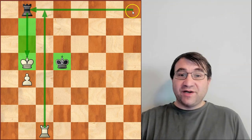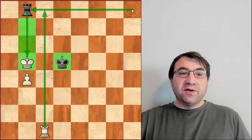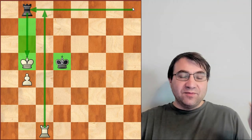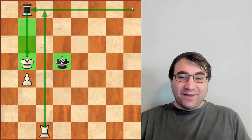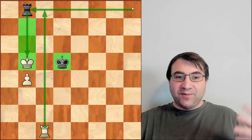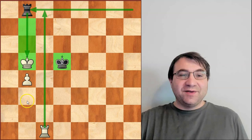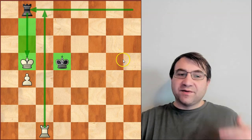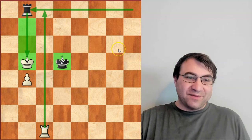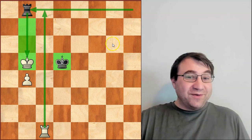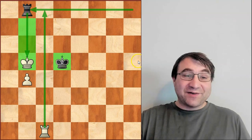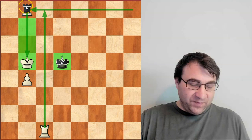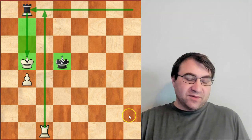Now in rook and pawn endgames, it's really critical that when you're defending and trying to achieve a draw, you put your rook in the position where it has maximum checking distance. It's not really all that relevant where that position is. A lot of people say always put your rook behind the pawn or always put your rook on the side of the pawn. This is not correct. There isn't an always motif for rook and pawn endgames, but what you do always want to do is put your rook where you have the maximum checking distance.